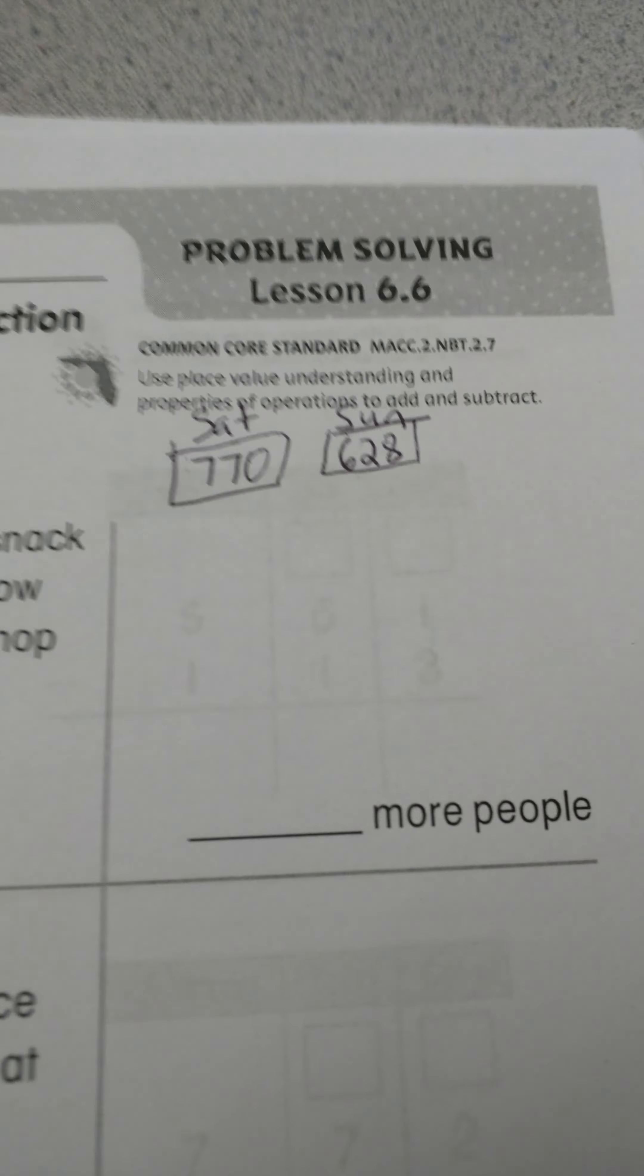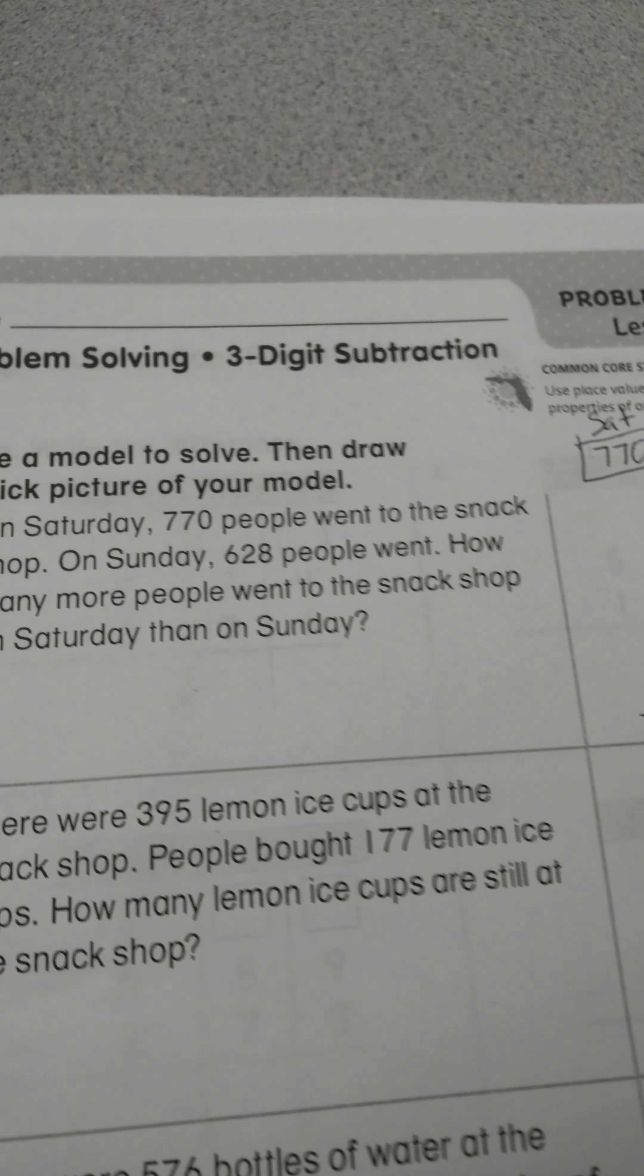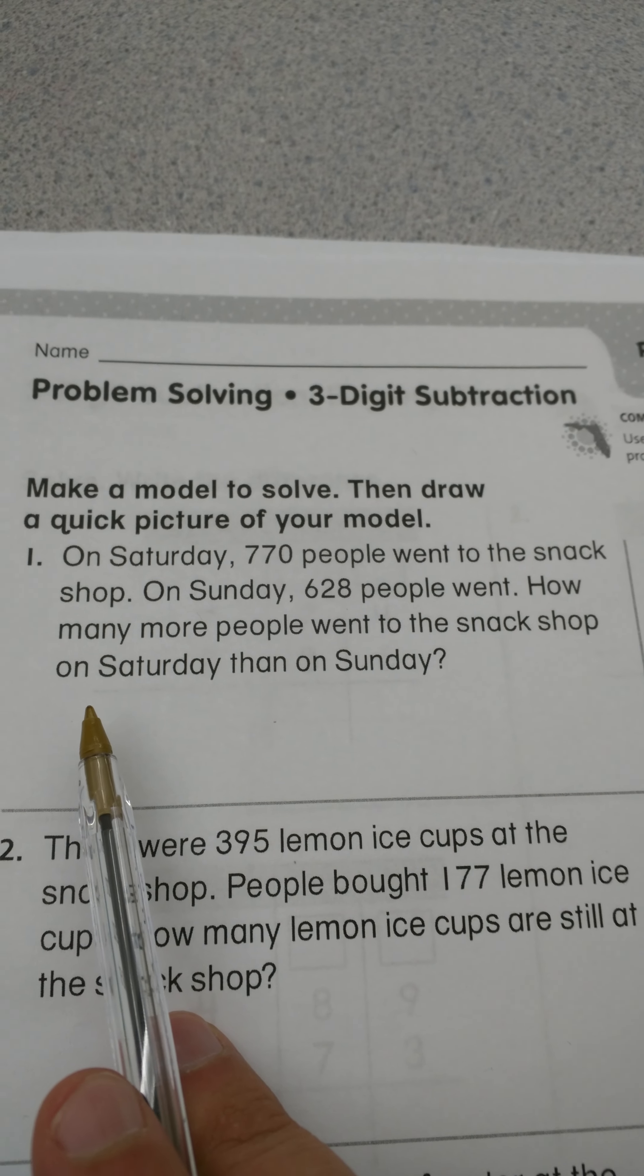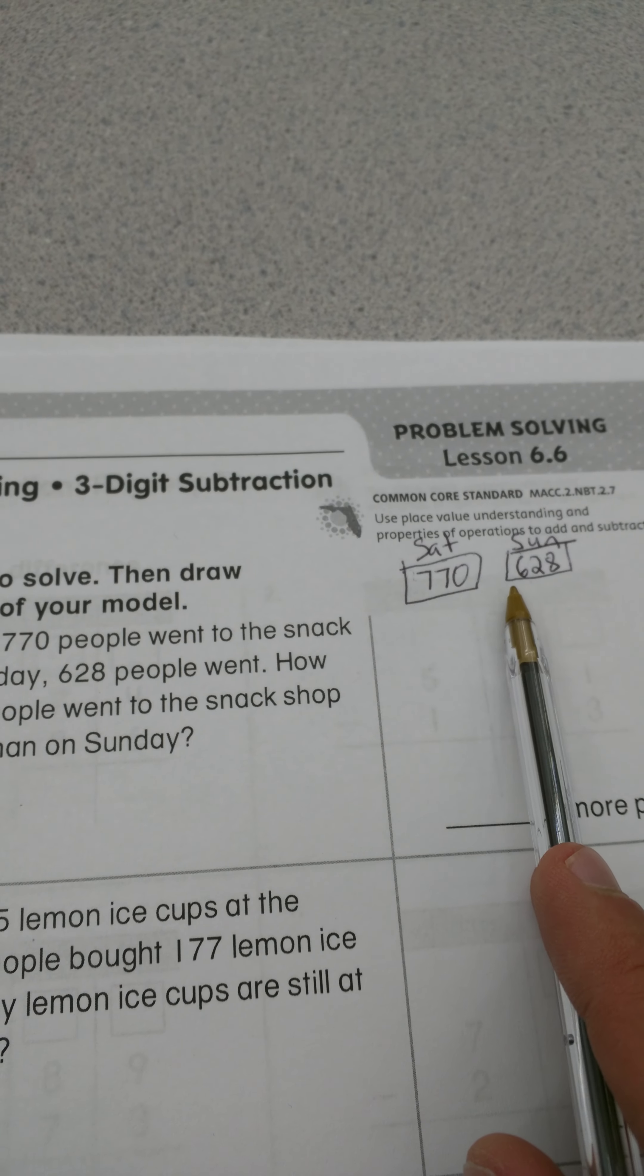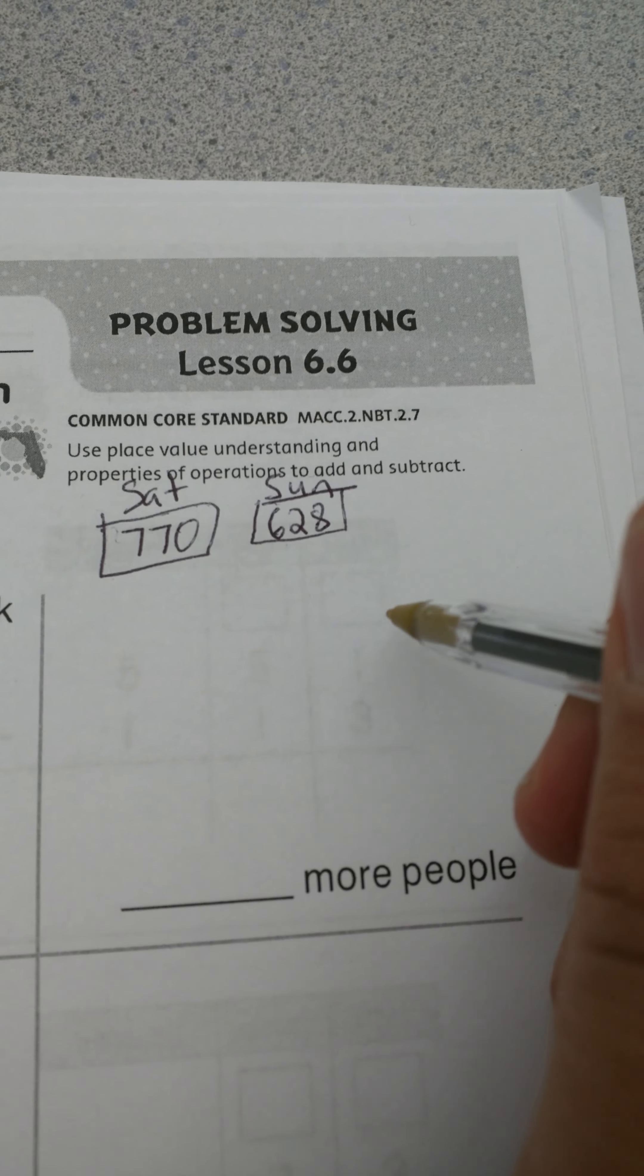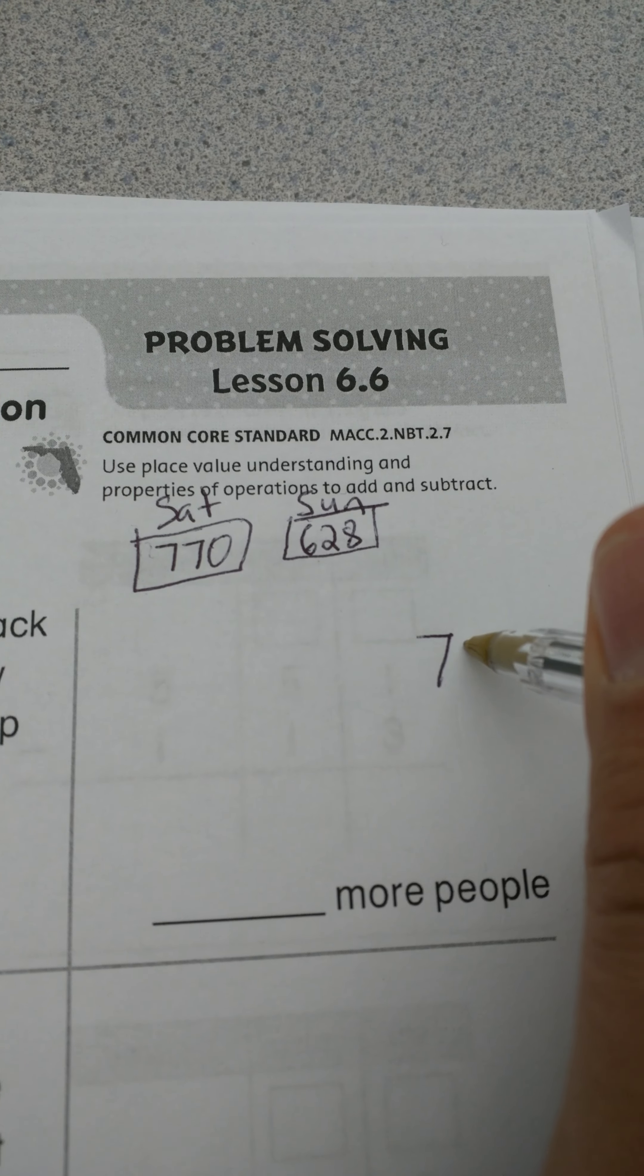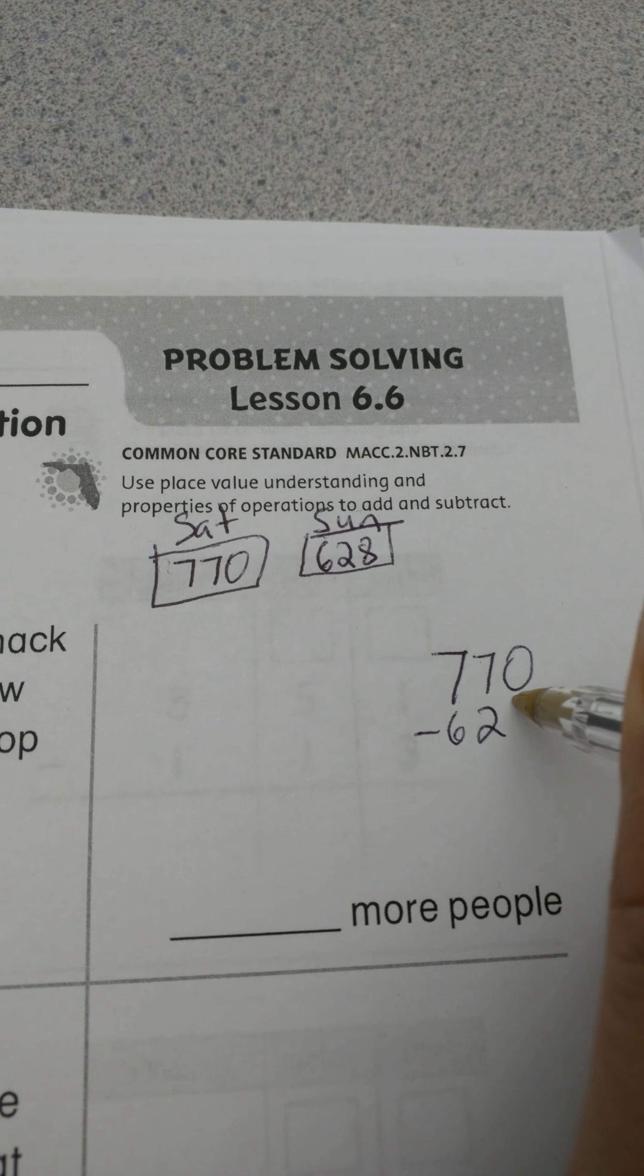I could do this many ways. I'm going to do it a couple different ways for you. Basically, we are comparing numbers here. When it says how many more went to the snack shop on Saturday than on Sunday, we have to figure out the difference between these two numbers. I want to show you two different ways: I'm going to show you the subtraction by writing the traditional form and by drawing pictures to help represent this form.